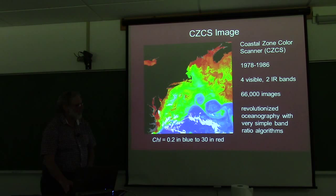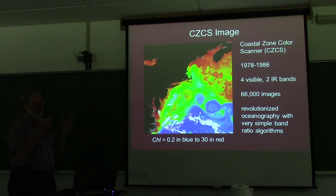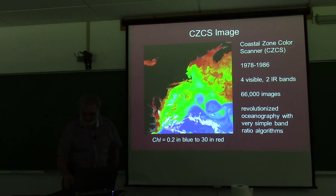CZCS was only a proof-of-principle satellite — just going up to see if it works. It actually worked for many, many years and generated 66,000 images. We're all here today because of simple little formulas like that.